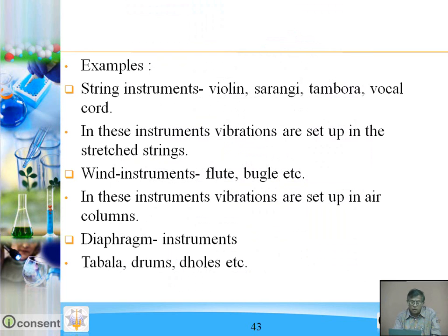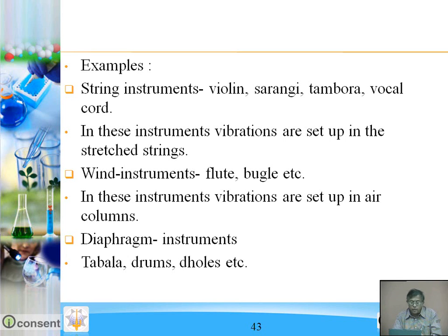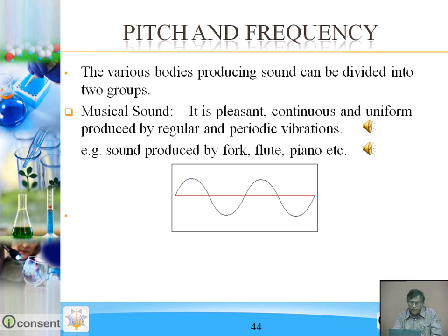Wind instruments such as flute and bugle — vibrations are set up in air columns. Diaphragm instruments such as tabla, drums, and dholes — vibrations are set up in the diaphragm.